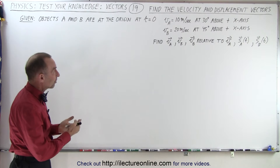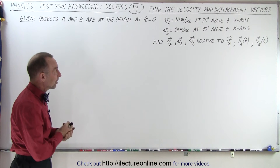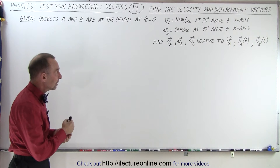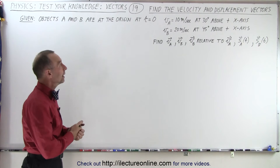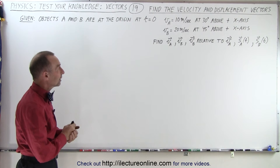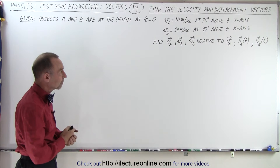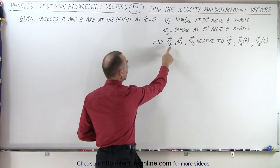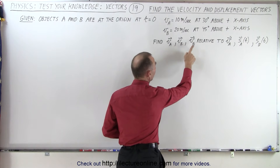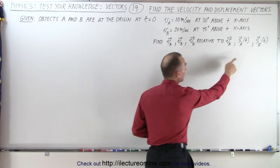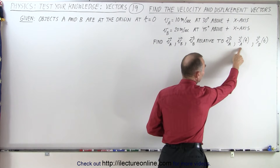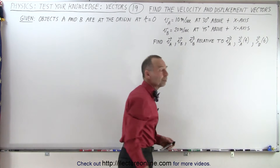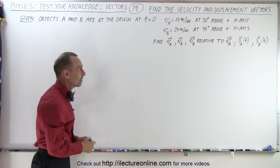They each have a velocity. The velocity of A is 10 meters per second at 30 degrees above the x-axis, and VB, the velocity of object B, is 20 meters per second at 45 degrees above the positive x-axis. We need to find the velocity vector for A, the velocity vector for B, the velocity of B relative to A, the displacement of A as a function of time, and the displacement of B as a function of time.